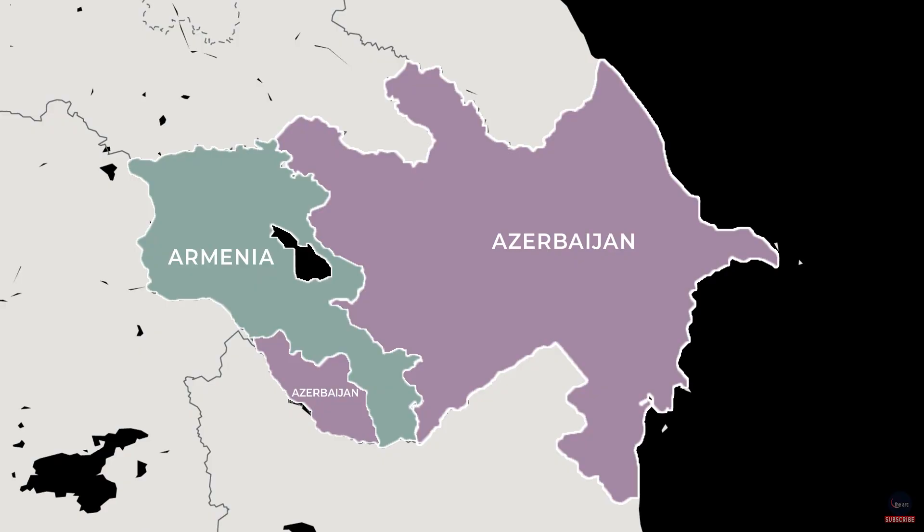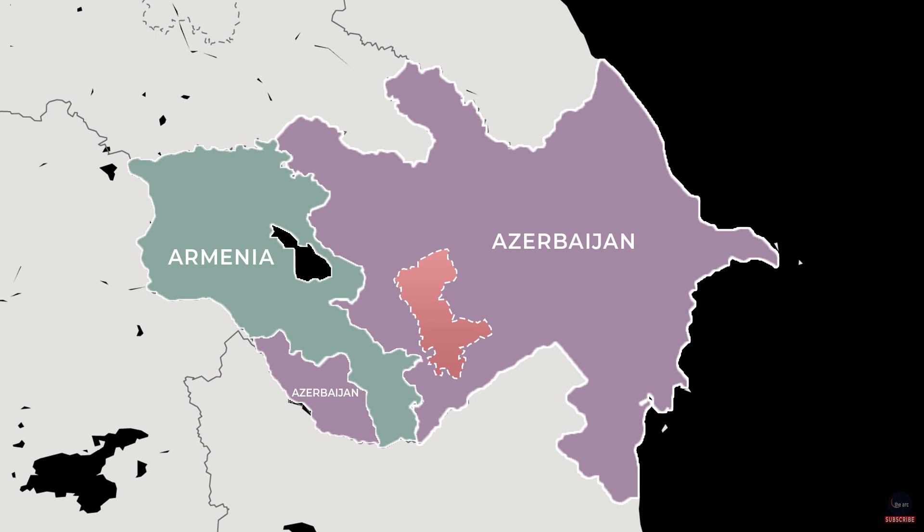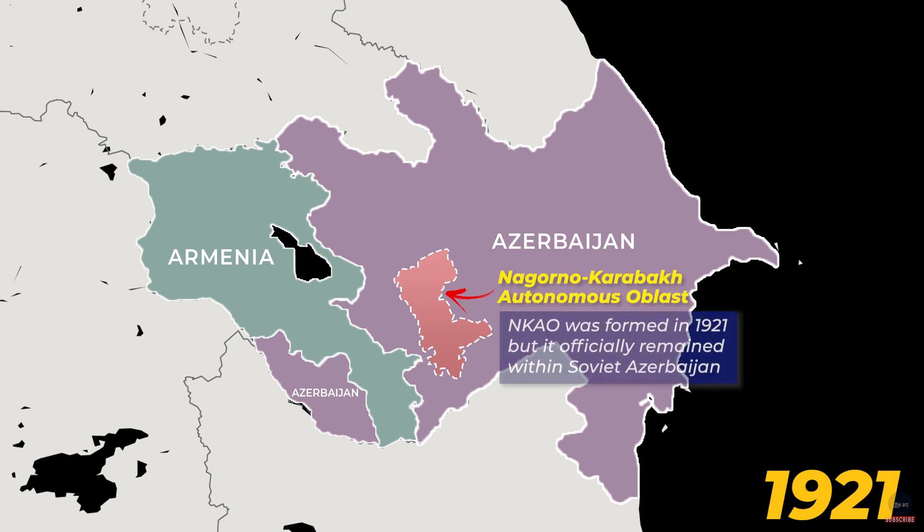Azerbaijan and Armenia are both former Soviet republics. The Nagorno-Karabakh region, predominantly populated by ethnic Armenians, was established after the fall of the Russian Empire in 1918. Later when the Soviet Republic was formed, the Nagorno-Karabakh Autonomous Oblast was formed in 1921 within Soviet Azerbaijan. The Nagorno-Karabakh region wanted to merge with Armenia, but that never happened and the ethnic tensions kept simmering.